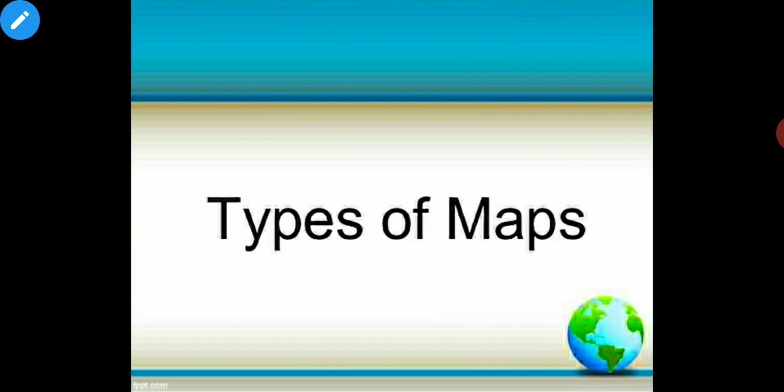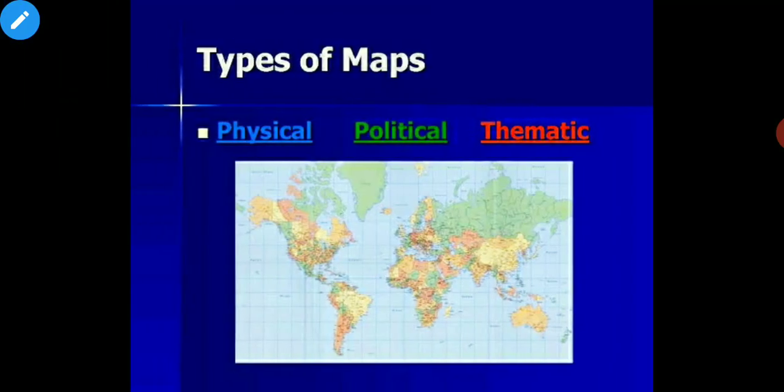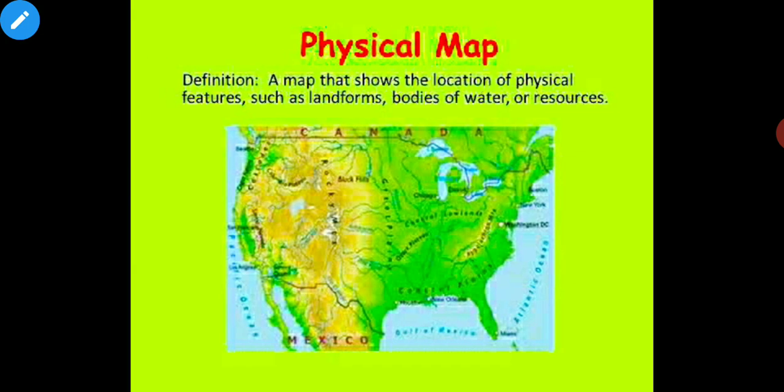Now, types of maps. There are three major types of maps: physical maps, political maps, and thematic maps. We will discuss each of them.